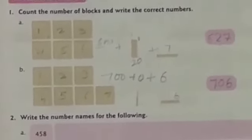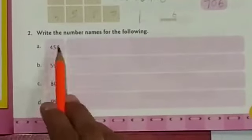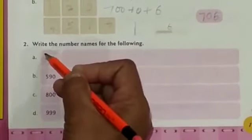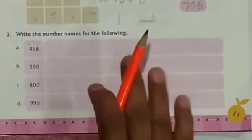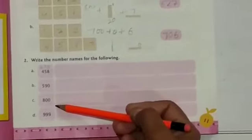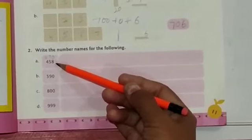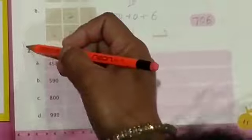For today, this is enough. We will take the revision of numbers up to 3 digits. This is your homework: write the number names for the following numerals. There are 4 sums. For example, take 158 — first put the ones, tens, and hundreds place value, then write the number name of the numeral. Take your notebook and write these numbers. You have to write their number names. This is the homework for today.